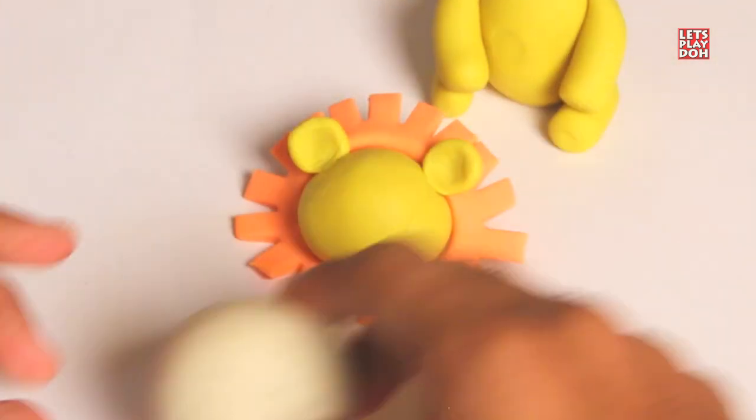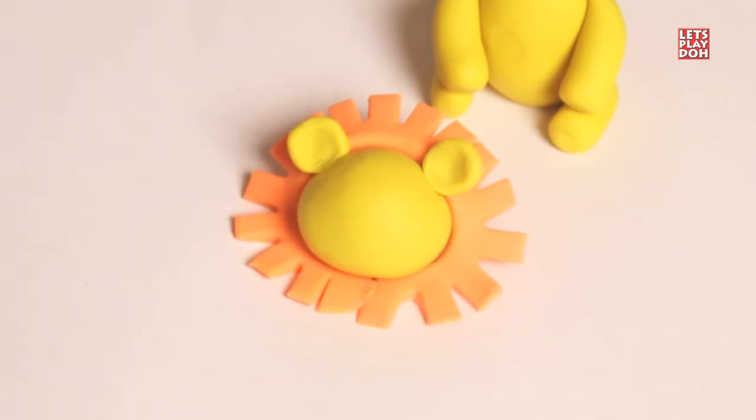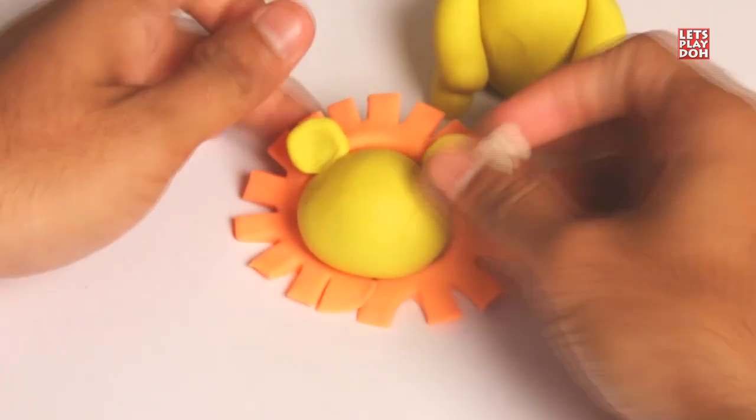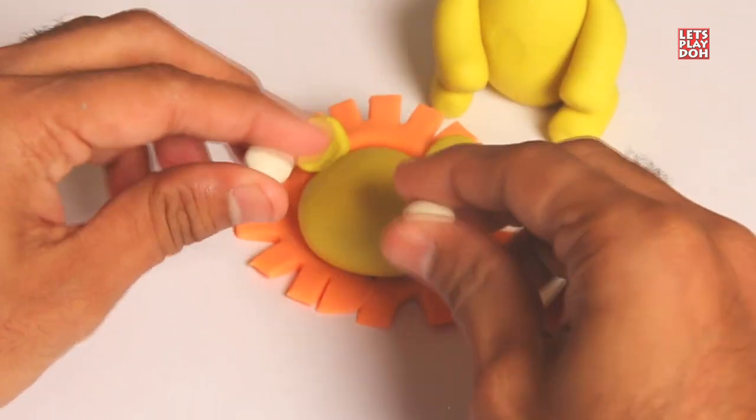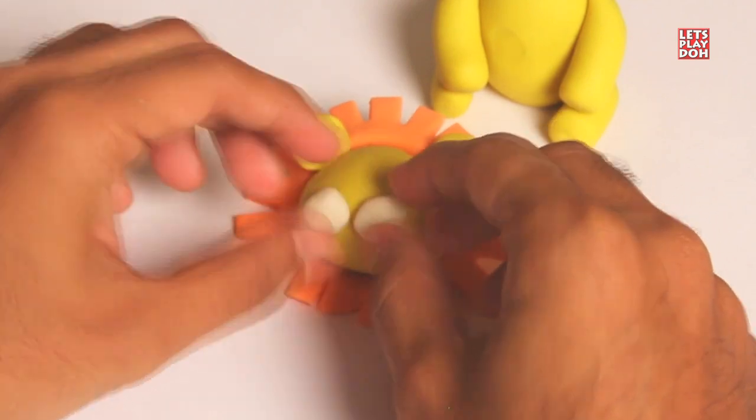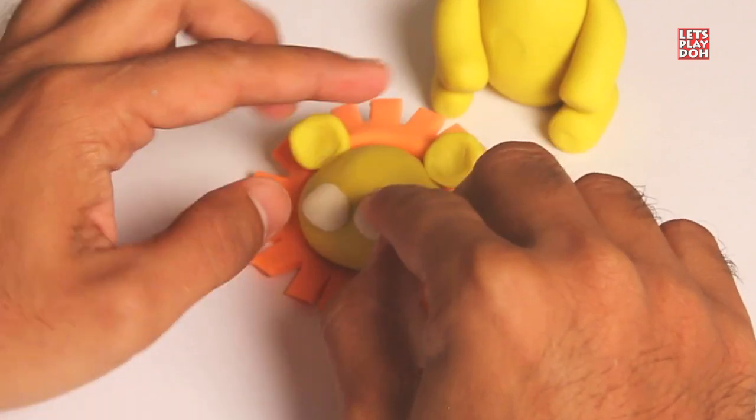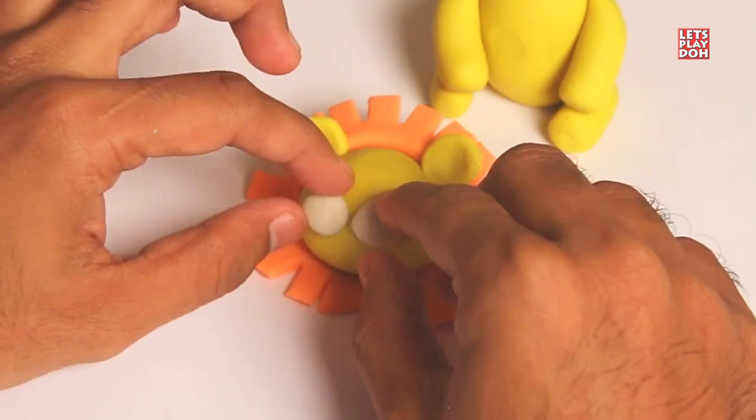Okay. Little by little. Now let's take some white Play-Doh. And create two small circles. A little thick, but not too much. And place them right in the center. It looks like these might become the eyes of the lion. But no. You'll see. Just a second here.